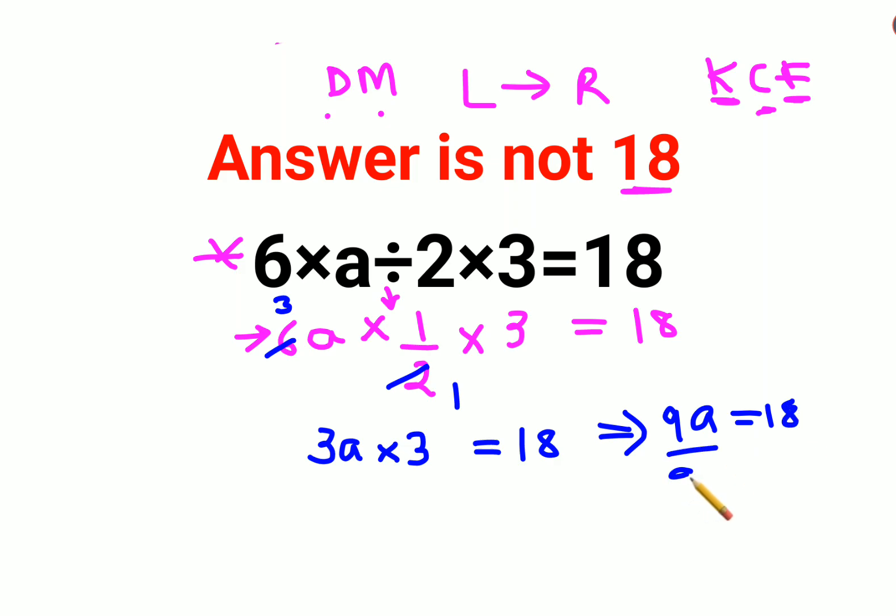So when you divide both sides by 9, this and this gets cancelled. This is 1 and 2. Therefore I can say value of a comes out to be 2.